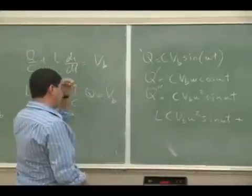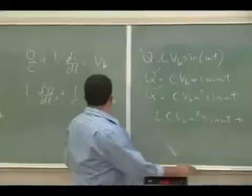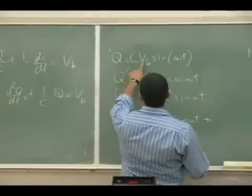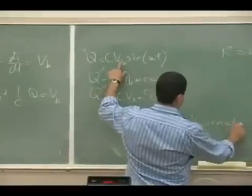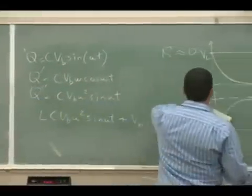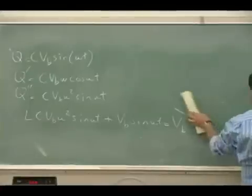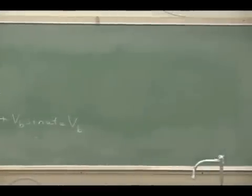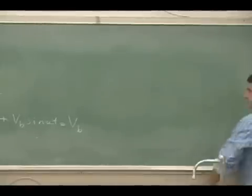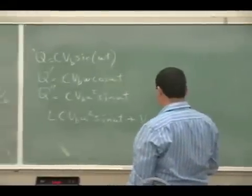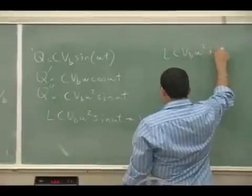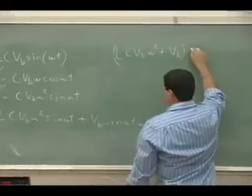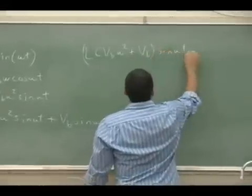Substituting back into the equation: L times the second derivative term plus (1/C) times the charge. The C cancels in that term, leaving just V_B. So we get: negative L*C*V_B*omega² times sine(omega*t) plus V_B equals V_B. Since this must hold for all time, the coefficient of sine(omega*t) must equal zero.